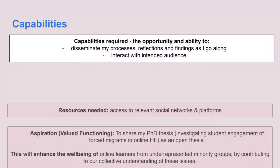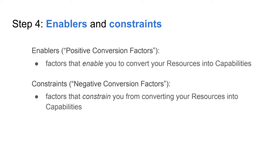That discussion about relationships resonates — all of Gabby's capabilities are about relationships. In her work with refugees as online learners, social engagement is one of four types of engagement being studied — alongside cognitive, behavioral, and emotional engagement. Social engagement does turn out to be pretty fundamental. Hopefully everyone has had a chance to think of a couple of capabilities needed to achieve their aspiration.